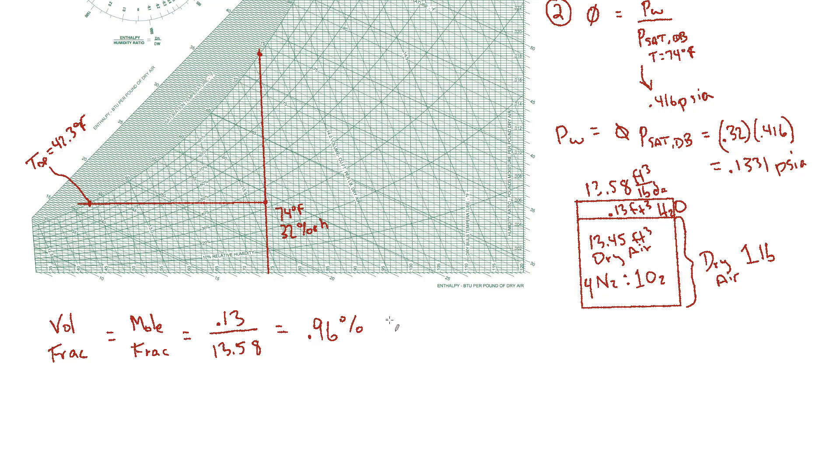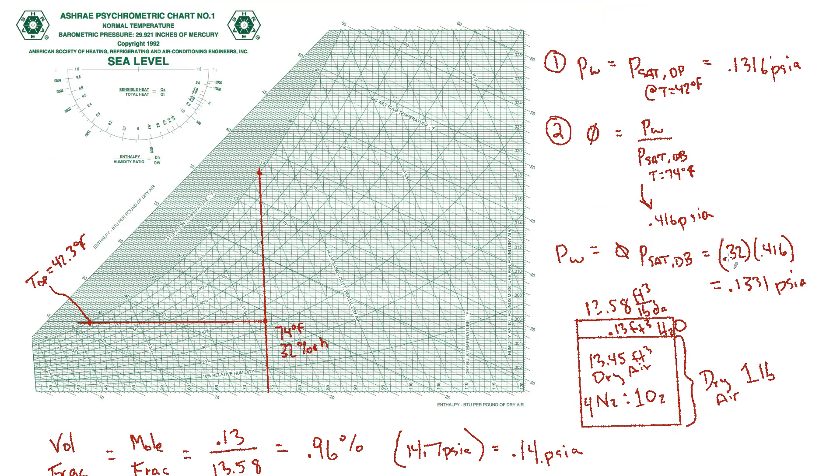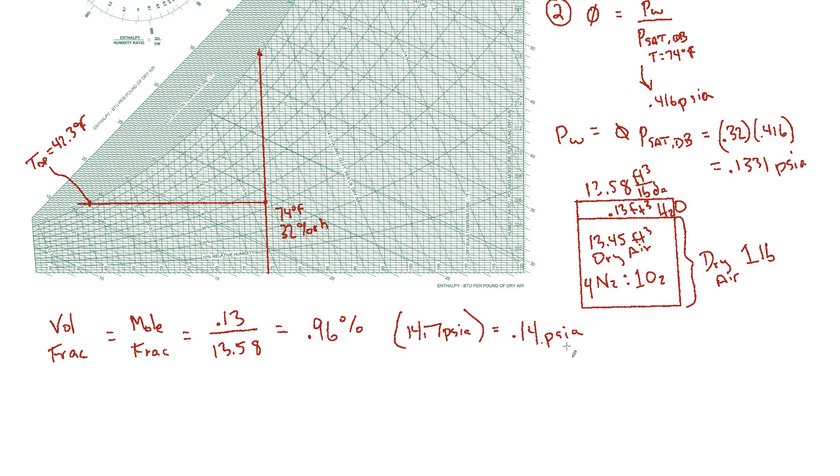So let's take that 0.96, multiply it by the total pressure. It's atmospheric pressure, right? Because I'm just in an ordinary room. So just multiply that by 14.7 PSIA. And that turns out to be 0.14 PSIA, which is pretty close to what we got in the other two choices, just a bit higher, but close to that 0.1331 and the 0.1316. Now we're 0.14.